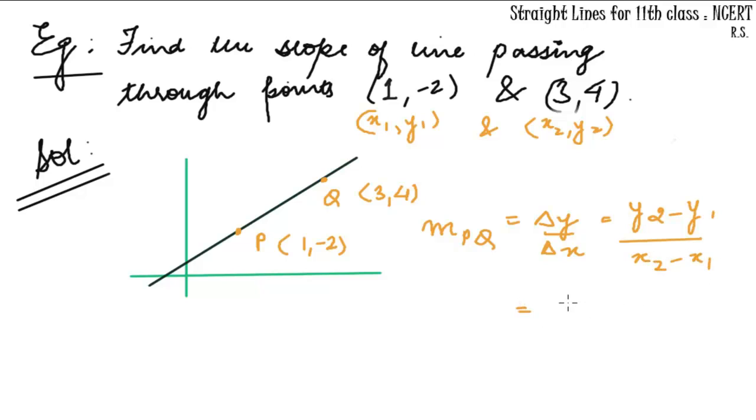So slope here is 4-(-2) upon 3-1, which equals 6 upon 2, which equals 3.